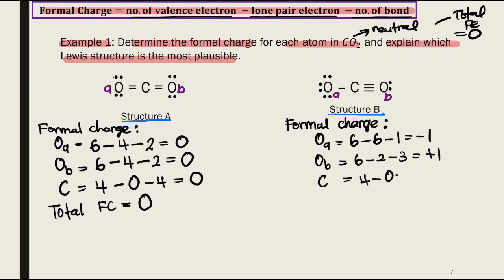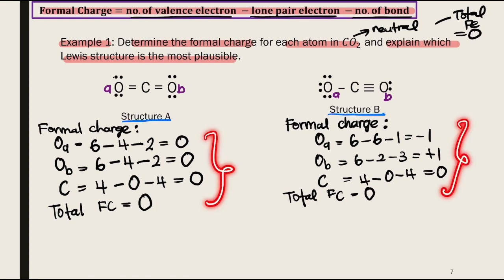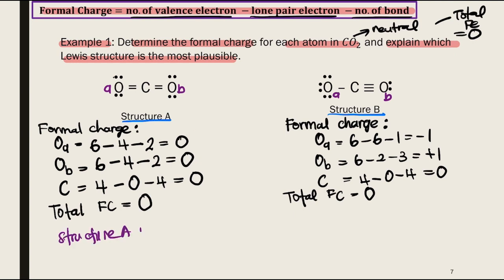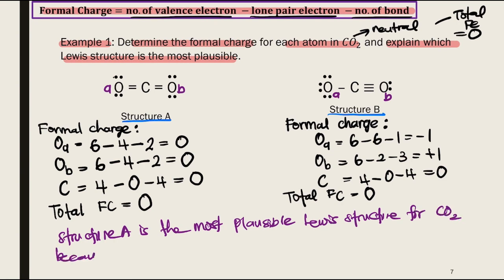For carbon in Structure B: 4 minus 0 lone pairs minus 4 bonds gives 0. The total formal charge is still 0. When we compare Structure A and Structure B, the atoms in Structure A bear the smallest formal charge, which is 0. Therefore, Structure A is the most plausible Lewis structure for carbon dioxide because all atoms bear the lowest formal charge.